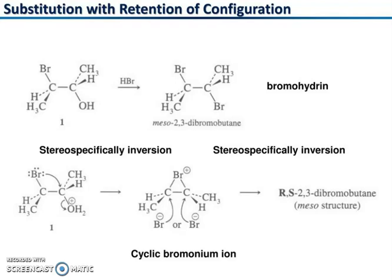Here OH is replaced by Br, and this Br yields meso-2,3-dibromobutane — a bromohydrin. The lone pair of electrons or unshared pair of electrons present on bromine is assisting this carbon and pushing the nucleophile, causing the leaving group to leave the center. There are two possibilities: either bromine attacks here or bromine attaches there, forming a cyclic bromonium ion and producing the meso RS-2,3-dibromobutane structure.